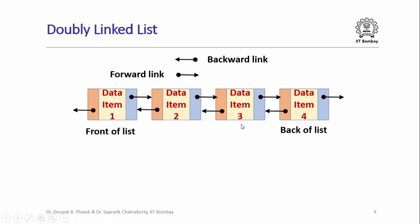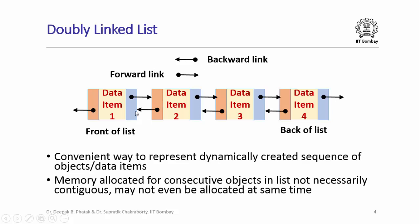It's called doubly linked because from every data item there is a link to the next data item as well as a link to the previous data item. Doubly linked lists are a very convenient way to represent dynamically created sequences of objects. The memory allocated for consecutive objects in the list are not necessarily contiguous and may not even be allocated at the same time. The previous element pointer of the front and the next element pointer of the back may be set to null or other specific values depending on the implementation.